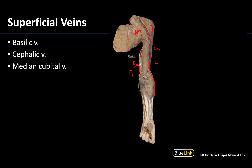One vein that is often described when discussing the superficial veins of the upper limb is the median cubital vein, right here. This vein is located anterior to the elbow region in the superficial cubital fossa, which is the depression in front of the elbow, and it allows communication between the cephalic and the basilic veins.